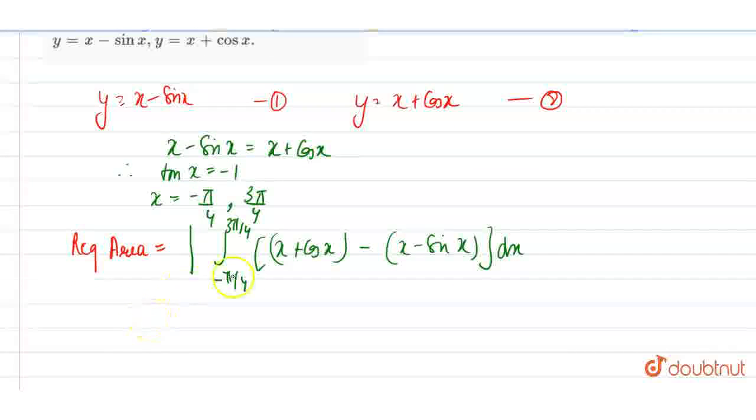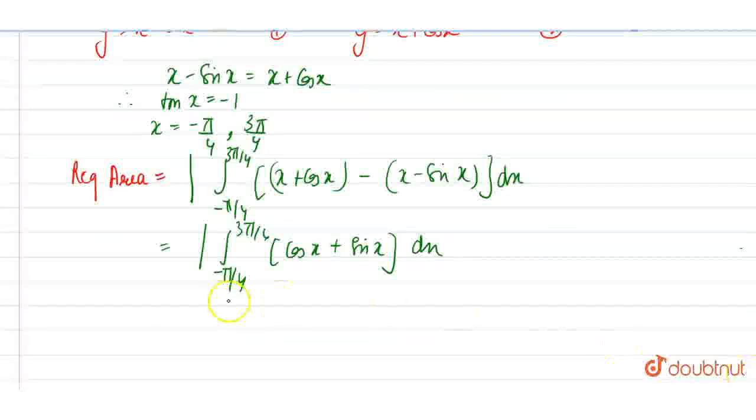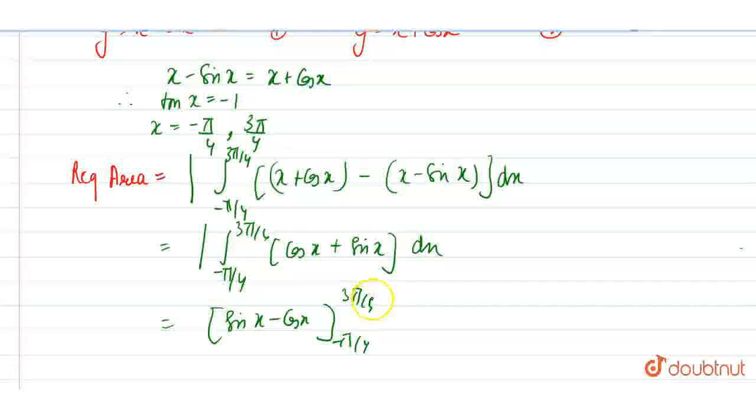So now, we have to just simply open this bracket and solve this equation. Now, it is modulus of minus pi by 4 to 3 pi by 4, cos x plus sin x dx. Because this x and this x cancel, only these two left, which is equal to sin x minus cos x limit minus pi by 4 to 3 pi by 4.